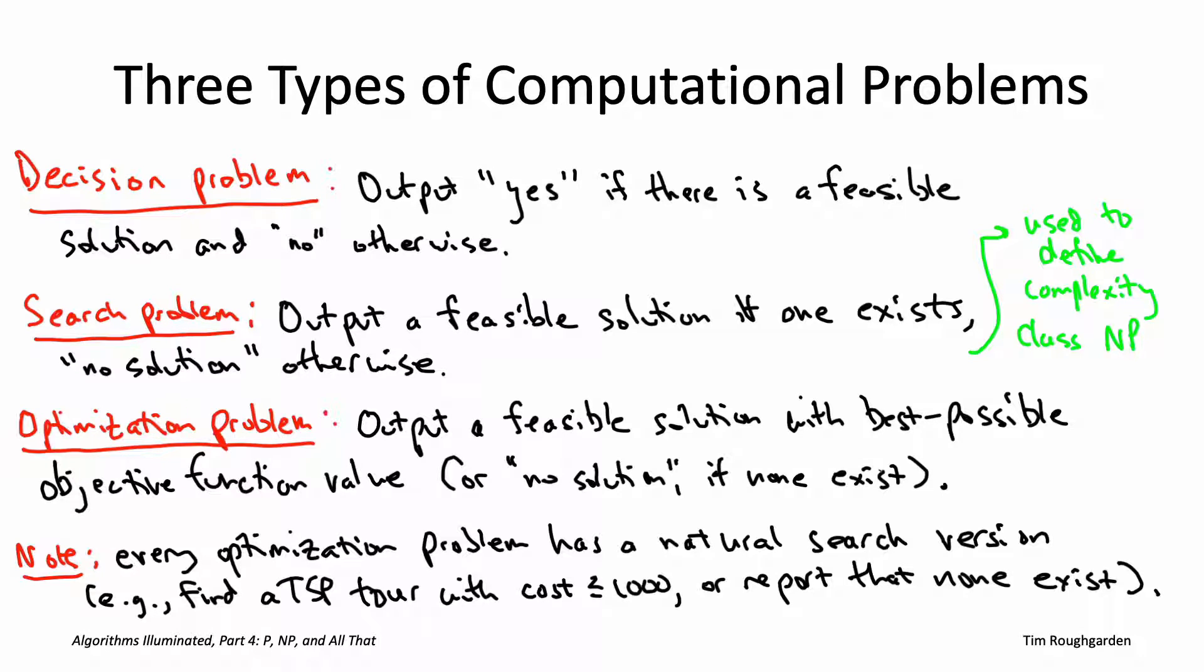But for the purposes of this chapter only, where we're just trying to figure out which problems are polynomial time solvable and which ones appear not to be, there's no reason to distinguish between the search and optimization versions. One of them is polynomial time solvable if and only if the other one is, and similarly one of them is NP-hard if and only if the other one is.